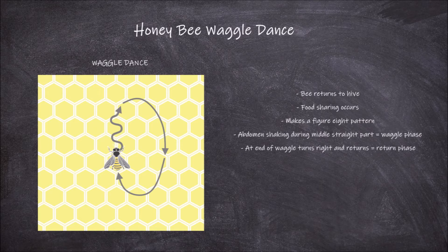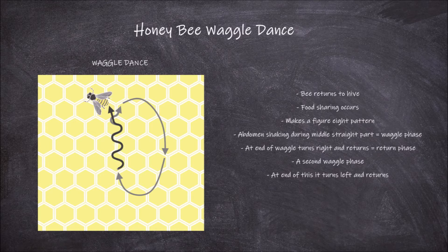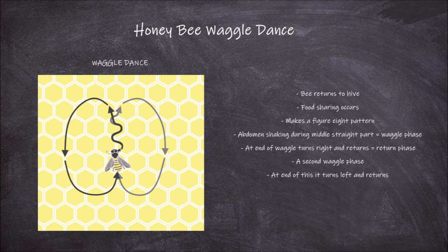This is called the return phase. The bee will then do another waggle portion. It will then turn to the left and return to the beginning, completing the figure eight pattern. This dance is repeated many times by the returning bee.